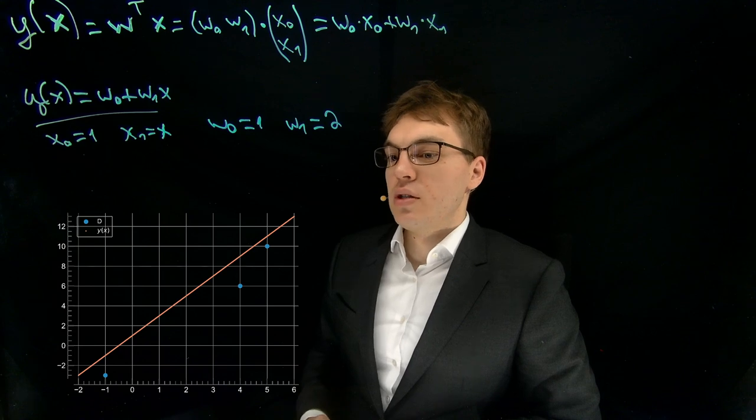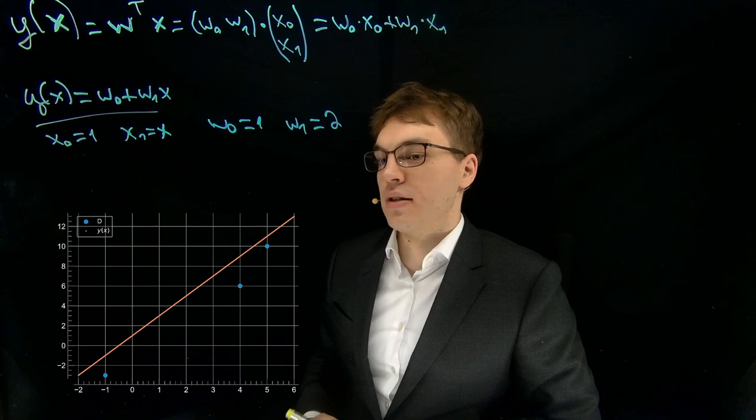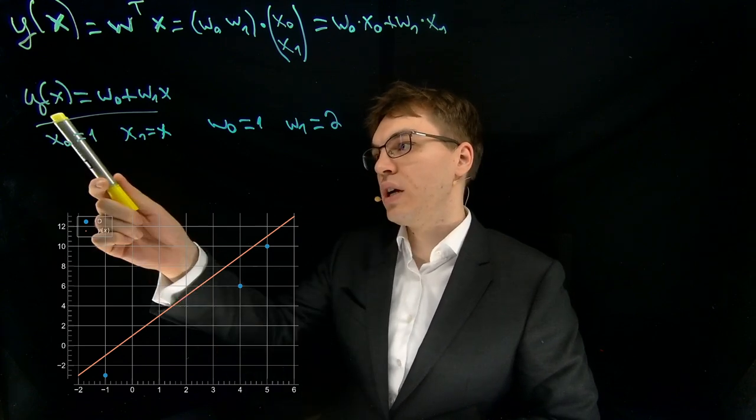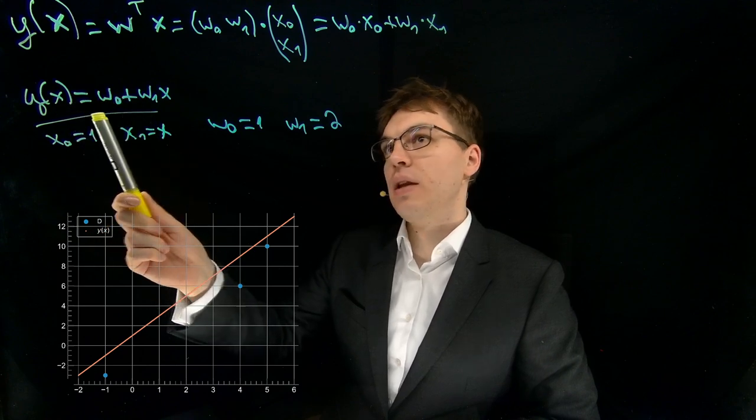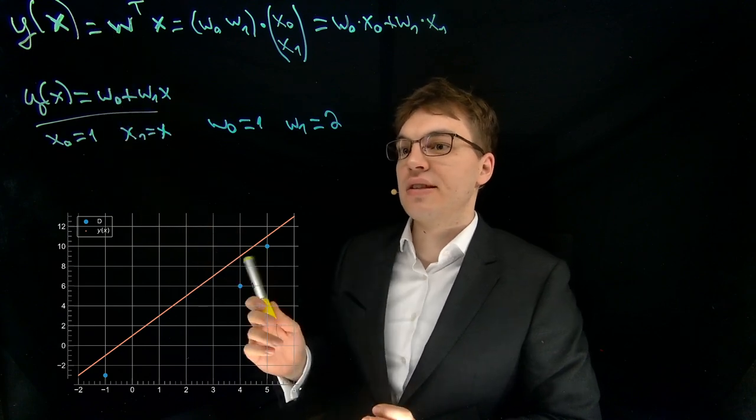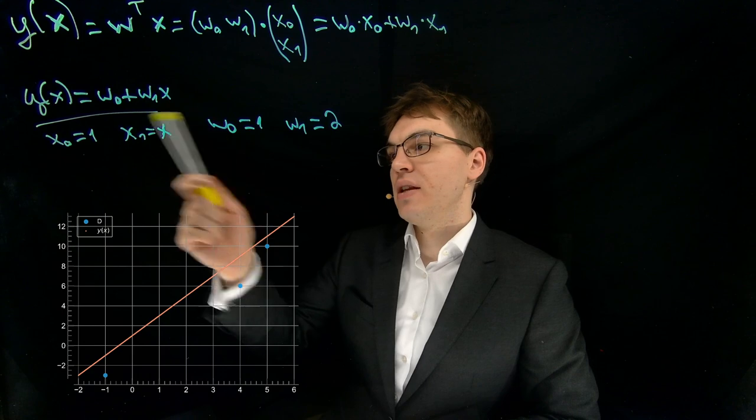So let's find one point first. One point could be, for example, the intersection with the y axis, so x equals 0. We can fill it in here. And please keep in mind that these equations are just the same, but they look a bit different. So we fill it in here.